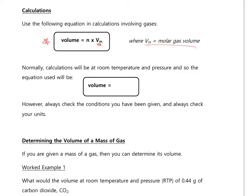So the volume equals the number of moles of gas times the molar gas volume. For example, if the number of moles is 1 and this is done at room temperature and pressure, volume equals 1 × 24 dm³ = 24 dm³. That is consistent with Avogadro's law — one mole of any gas at RTP occupies 24 dm³.